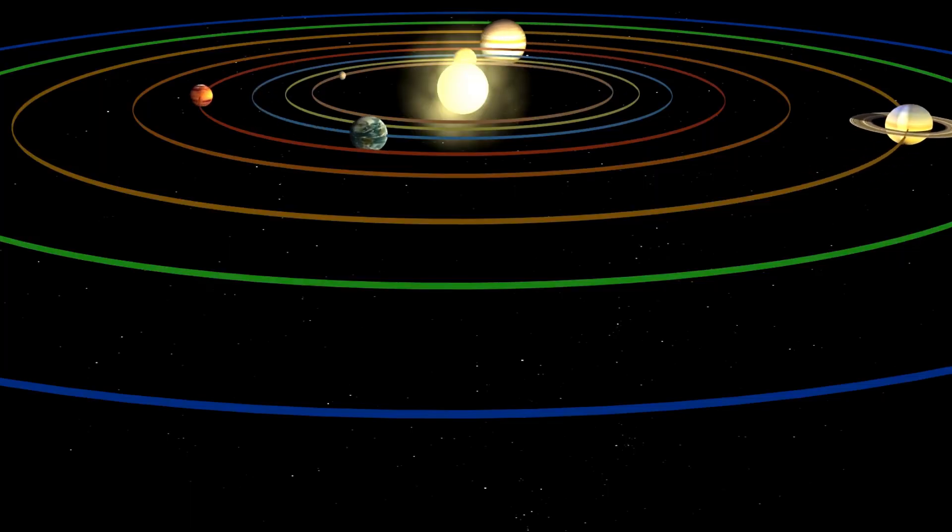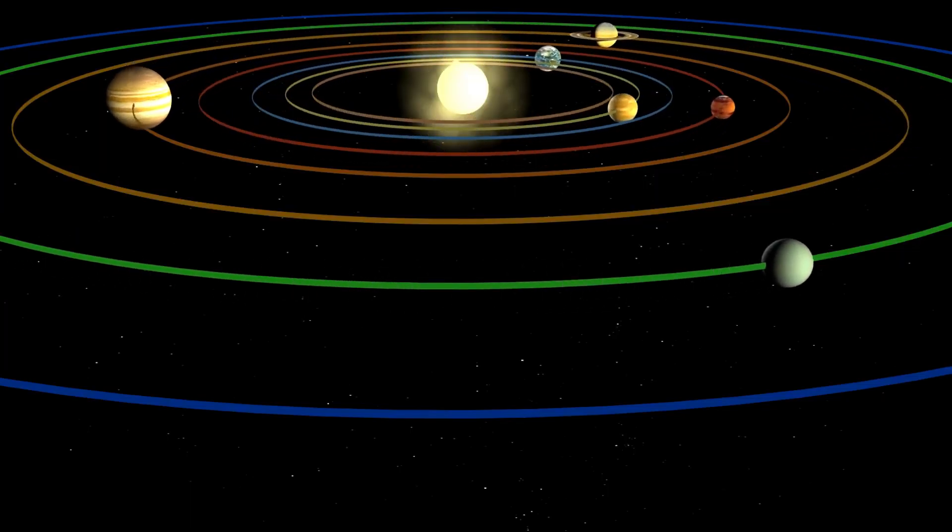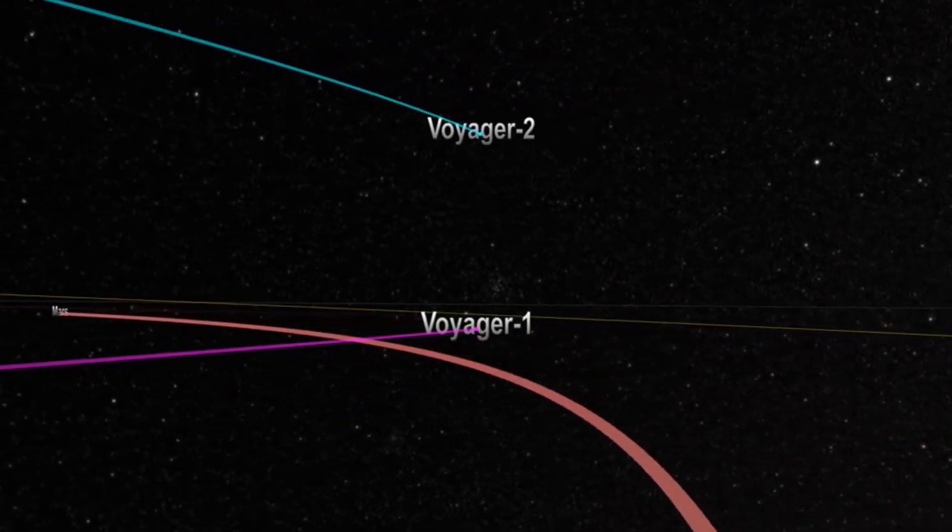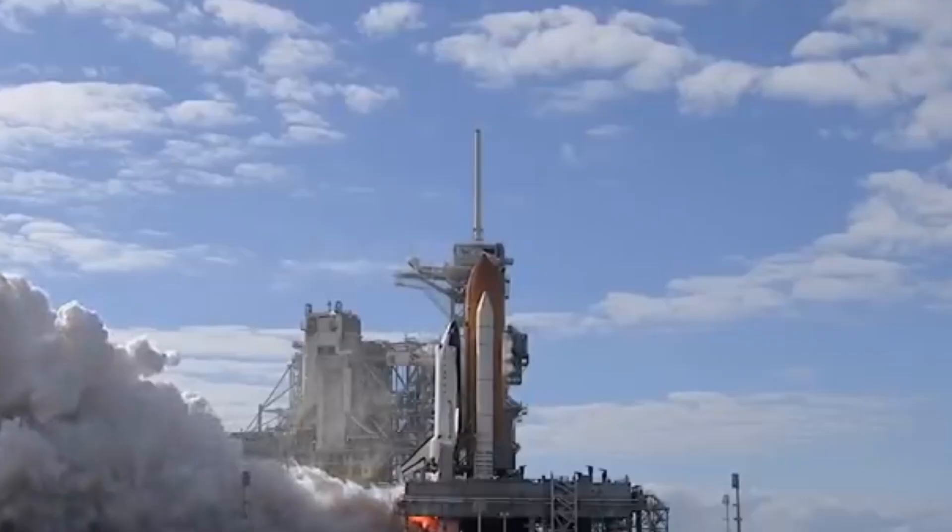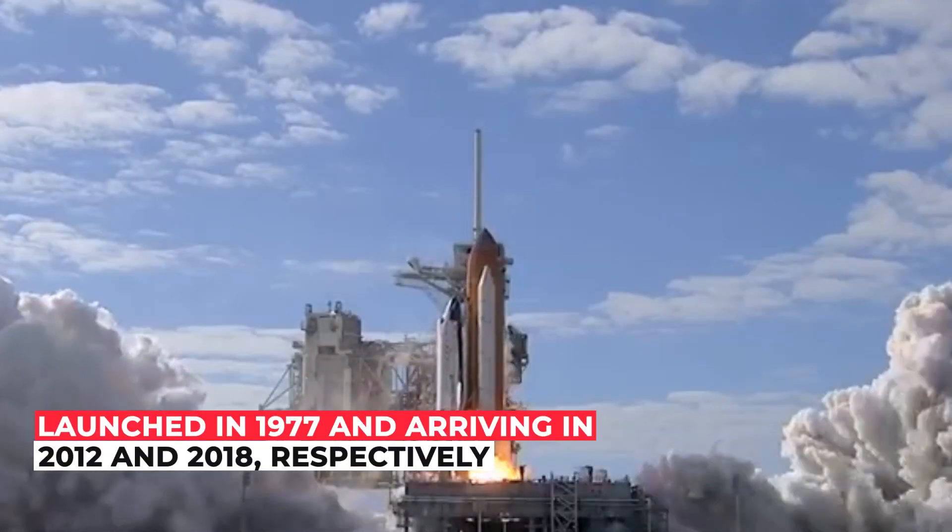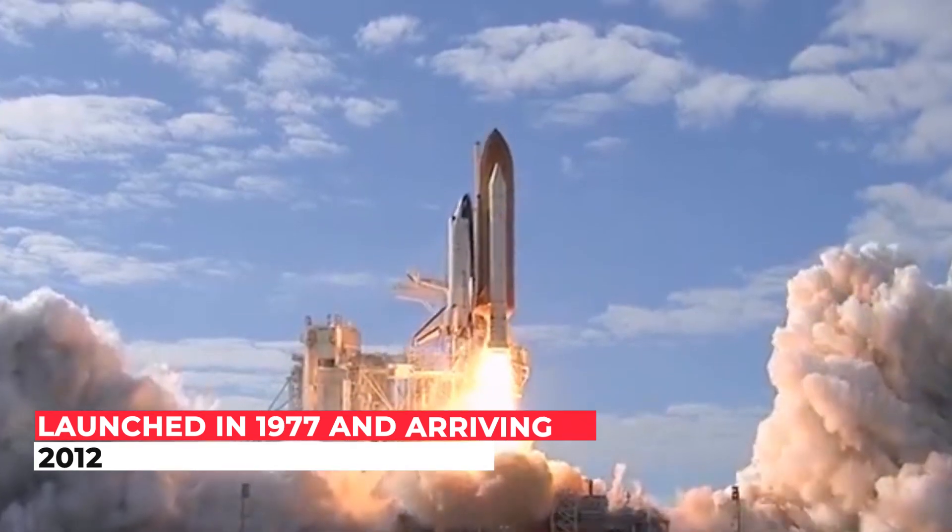All major planets' orbits, including Earth's, are well within the Heliopause. Voyager 1 and 2 were the only spacecraft across the Heliopause, launched in 1977 and arriving in 2012 and 2018 respectively.